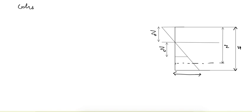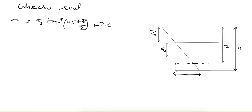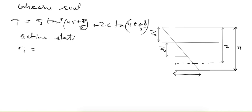Let's see the earth pressure for cohesive soil. The basic formula we use is σ1 = σ3·tan²(45 + φ/2) + 2c·tan(45 + φ/2). In the active state, σ1 becomes the major principal stress, also equal to σz = γz, and σ3 is the minor principal stress equal to the active earth pressure.